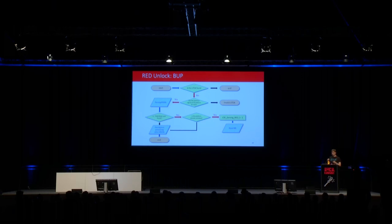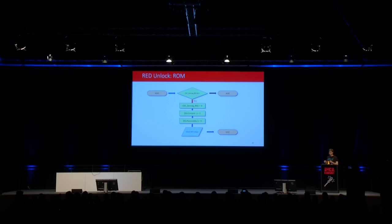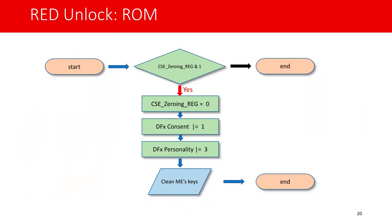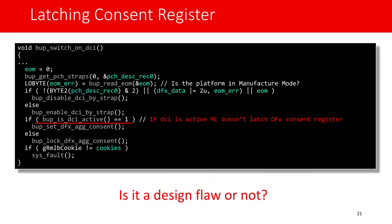Wenn die Plattform nicht schon offen ist, setzt BUB das CSE-Zeroing-Register und setzt die Management Engine zurück. Im ROM passiert Folgendes: Das CSE-Zeroing-Register wird geprüft, falls das gesetzt ist. Dann wird das Register zurückgesetzt und Consent und Personality werden angeschaltet – das heißt, da werden Bits gesetzt. Danach setzt das ROM die Management-Engine-Schlüssel zurück. Aber wenn das bereits aktiv ist, wird das Consent-Register nicht gesetzt.